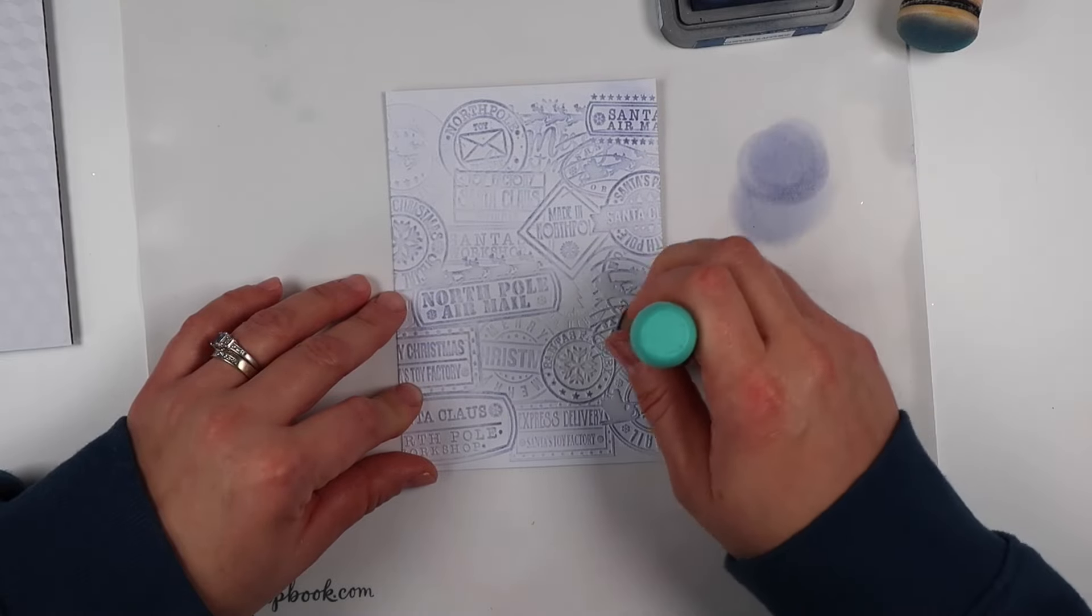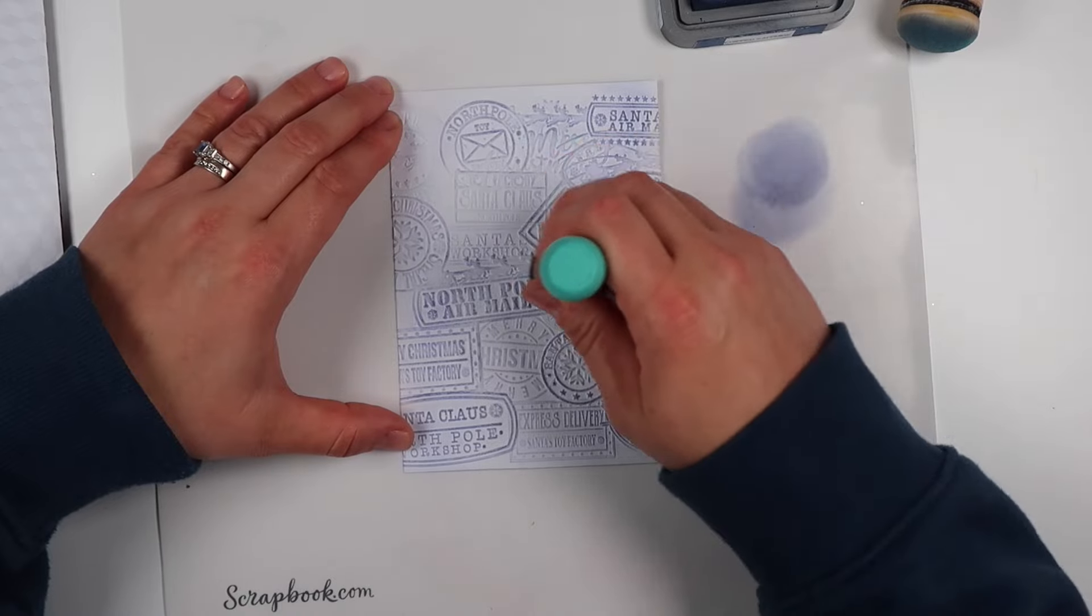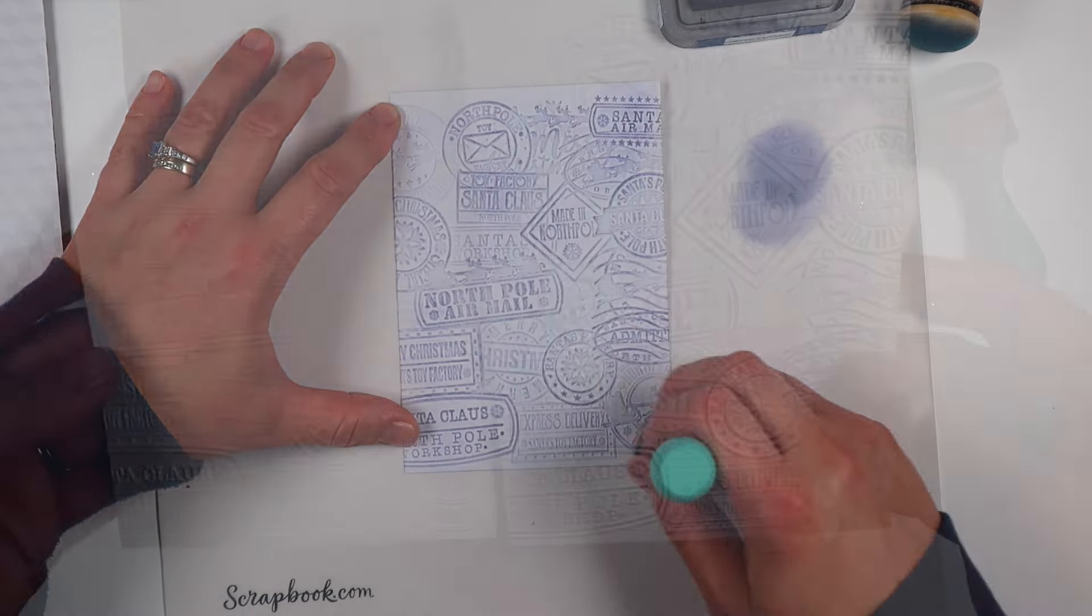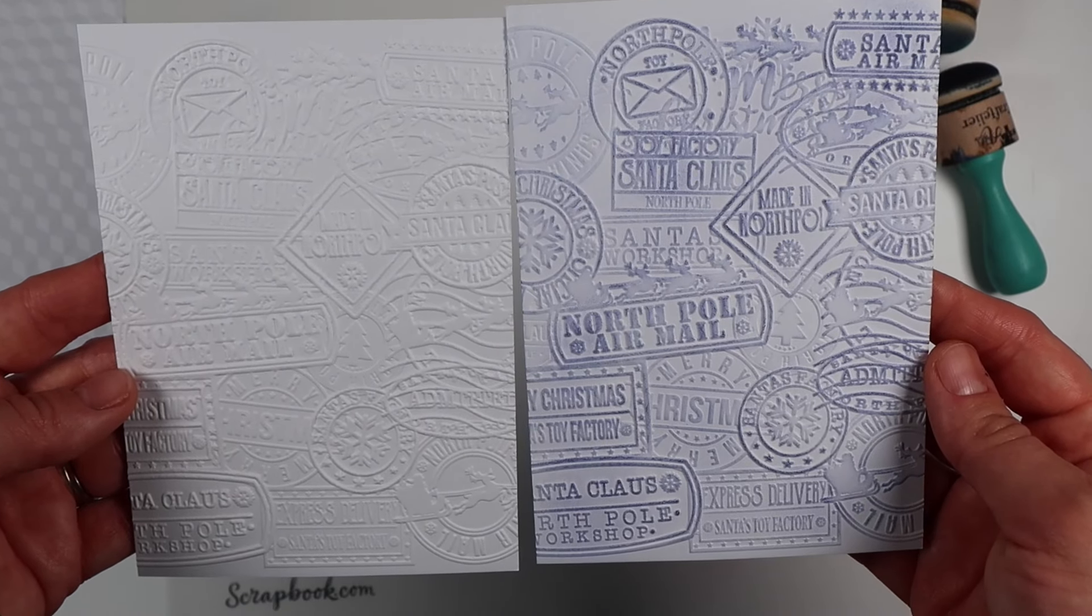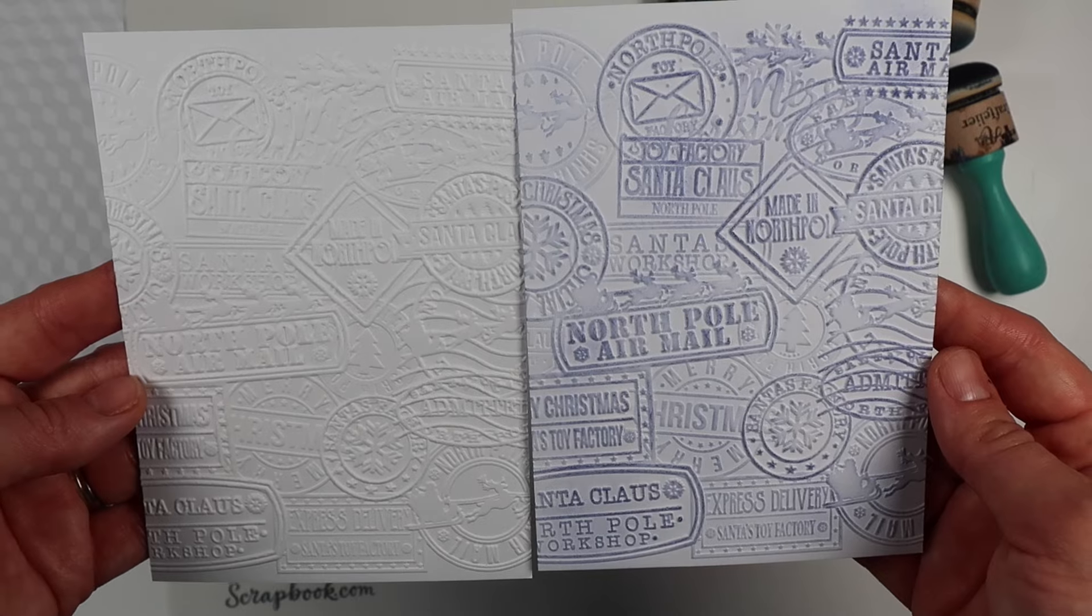You don't want to go too heavy-handed, otherwise you'll start to fill in the background as well, and it will just look like a colored panel rather than making the embossed images pop off the card. Here you can see the difference: on the right is with the gentle ink application, and on the left is the original without any ink.